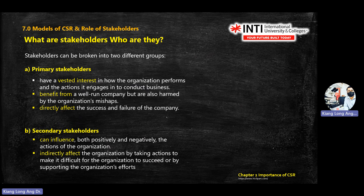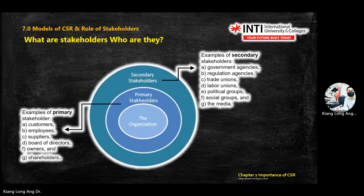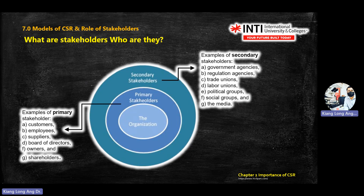In business, you'll discuss stakeholders a lot. We have two types: primary and secondary. Primary stakeholders are anything related to the corporate entity directly — customers, employees, suppliers, board of directors, owners, and shareholders. Secondary stakeholders are outside the corporate entity — social media, government agencies, trade unions — those not directly dealing with the business. There's one question about this in the quiz and also the final exam.